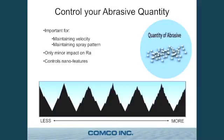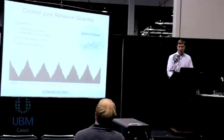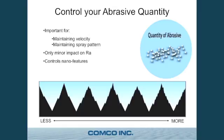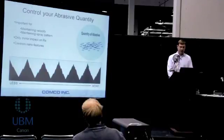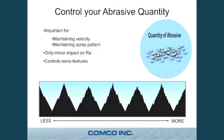The last thing you need to control is abrasive quantity. As shown previously, more or less quantity will affect your velocity, so you need a constant quantity. More abrasive also causes the stream to fan out and makes an uglier spray pattern, so you want a nice lean stream because it's controllable. Quantity does not have a great effect on RA because it continually reshapes the part, but it does have a very large effect on nano features. A sparse stream produces very few impacts per area, while a dense one produces many nano features — and what that looks like to the eye is darker. You could blast a part for increasing durations and a random person could put the samples in order, even though the RA is the same.